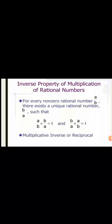The next property is the inverse property of multiplication of rational numbers. Inverse is basically the reciprocal of a given number. When you multiply a number with its reciprocal you get 1. For example, when you multiply 2 by 3 with its reciprocal 3 by 2 you get 1.